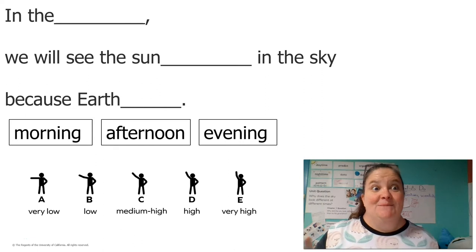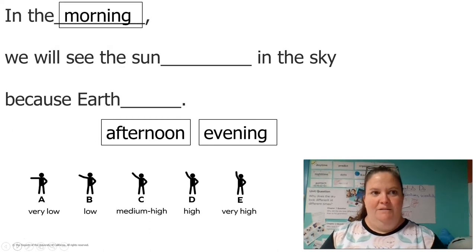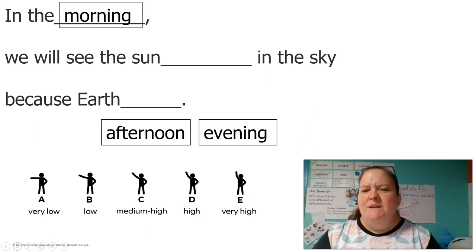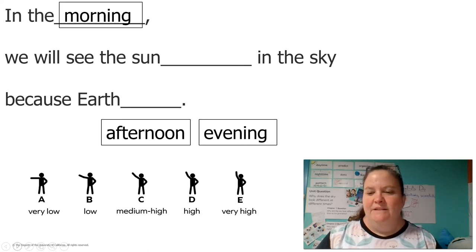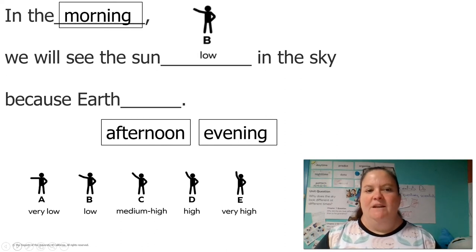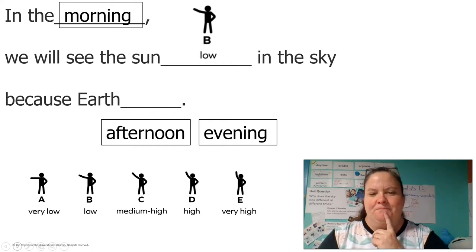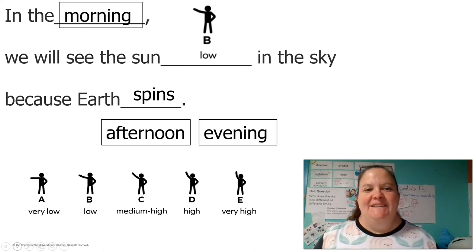Let's do this together — I've got some sentence stems. In the morning, we will see the sun blank in the sky. Where do we see the sun in the morning? Very low, low, medium, high, or very high in the sky? In the morning, where do we see the sun? Yeah, low. We see the sun low in the sky. And why? Because earth — what does earth do? It spins. In the morning, we will see the sun low in the sky because earth spins.